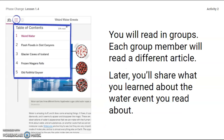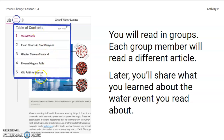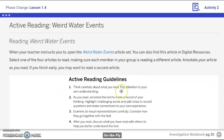Now you're going to read in groups. Each group member is going to be reading a different article, and later you're going to share what you learned about the water event that you read about. Right now you should assign the different articles to the people at your table. There are five articles, so find five people at your table to read each one. You may have more than one person reading a few articles if you have eight people at your table. Make sure you follow those active reading guidelines.